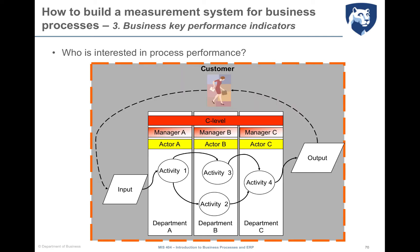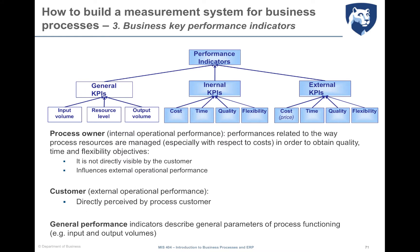Looking at the organizational structure of a general company, we immediately identify two types of stakeholders: the external customer and internal company people. KPIs should be defined and measured to satisfy the interests of both categories. Our reference framework distinguishes four performance dimensions — cost, time, quality, and flexibility — under which we measure if and how a process is operating properly.